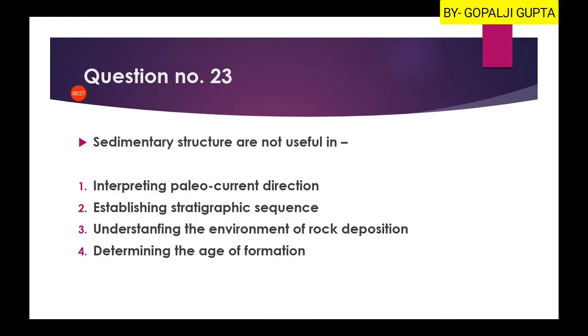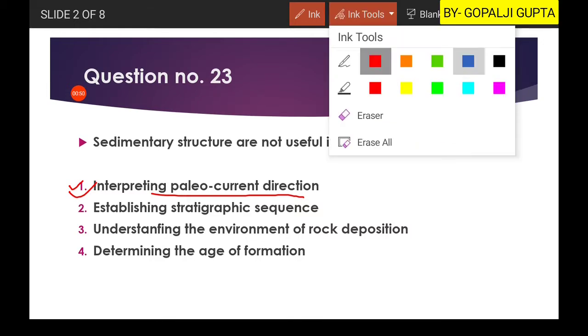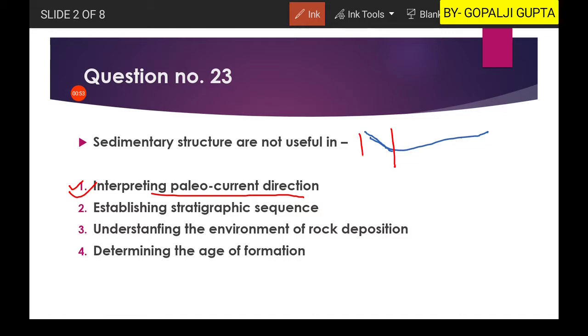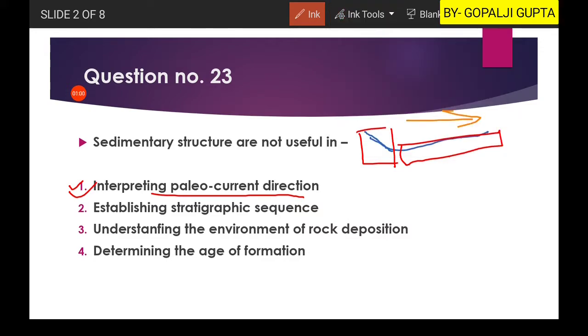The first question is: sedimentary structures are not useful in? Your options are interpreting paleocurrent direction. As far as the first option is concerned, we can use sedimentary structures for paleocurrent direction. As you know, a structure known as flute cast looks something like this. Here you have two sides - one is generally steeper, another is gentler. So the paleocurrent direction will be something like this.